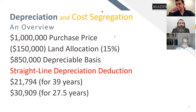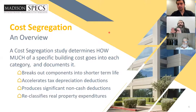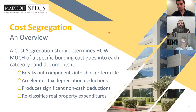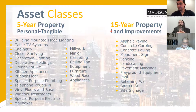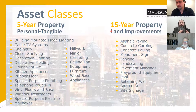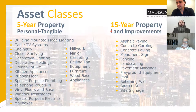Cost segregation is an engineering study where an engineer trained in both the tax code and construction engineering comes to the property and identifies every individual component, depreciating each on its own respective schedule — allowing you to create bigger tax deductions in the earlier years. We're talking about four different asset categories: land (which doesn't depreciate), building structure (depreciating on the 27.5 or 39-year schedule), 5-year personal property, and 15-year land improvements.